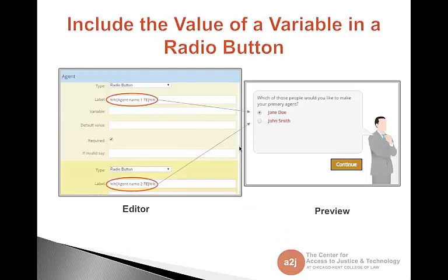You can also use a variable macro to include the value of a variable in a radio button. Here in the editor, we've included the variable macro format for both fields for the radio button, and the output is that the values of those variables show up as options for the radio buttons.